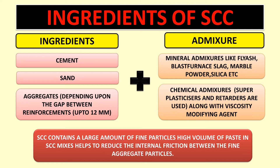Mineral admixtures such as fly ash, blast furnace slag, marble powder, and silica are used in SCC. Chemical admixtures such as superplasticizers and retarders, along with viscosity modifying agents (VMA), are also used.